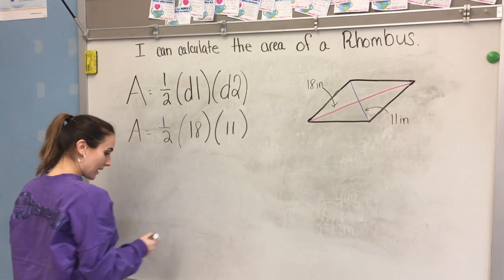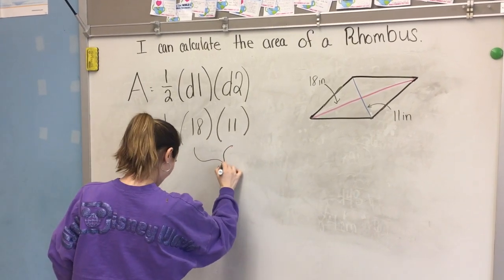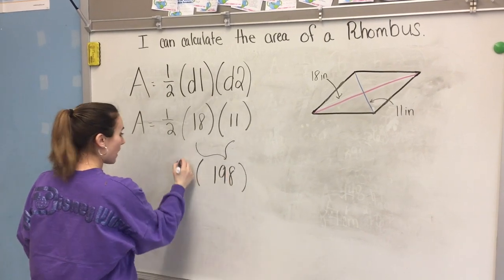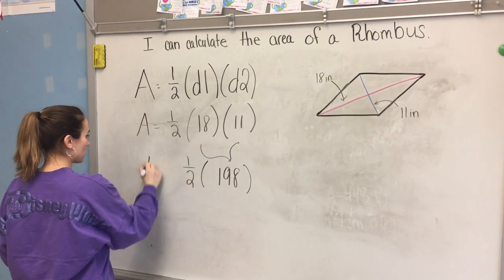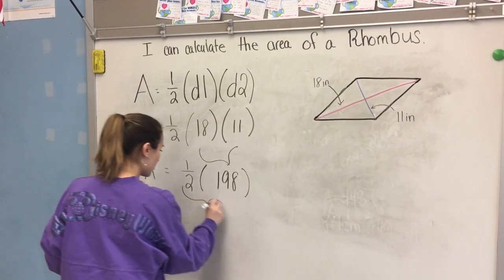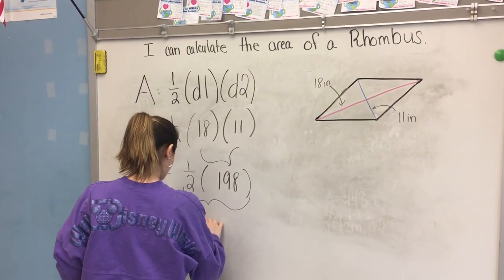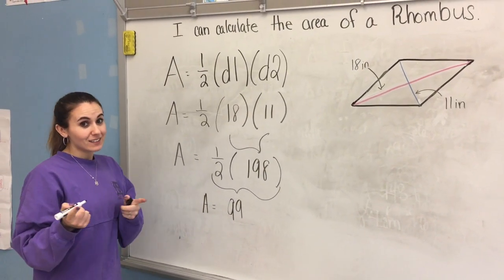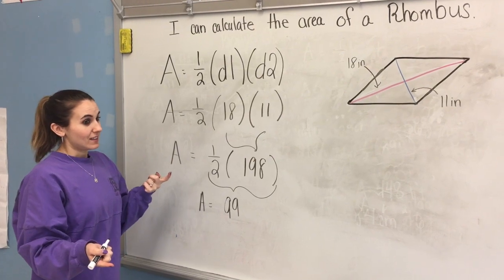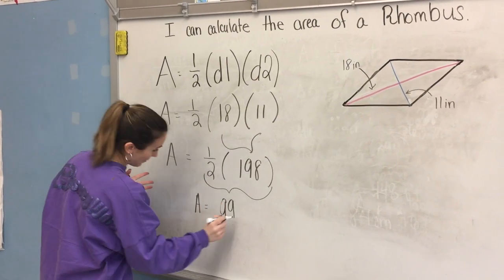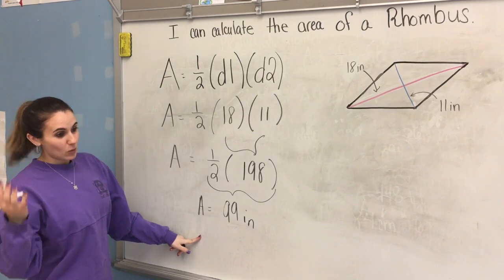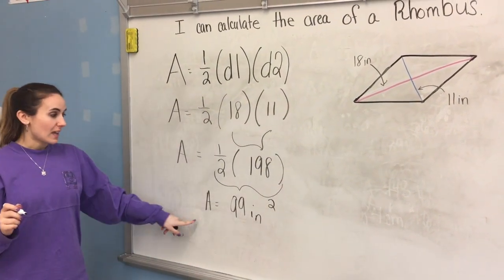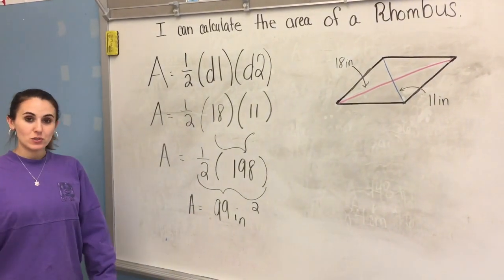So I have 18 and 11. Now if I multiply it together, I have 18 and 11 which equals 198. And then I can bring down my half. It's kind of similar to when we did the trapezoid. Now half of 198 gives us 99. So my area equals 99. And I'm not done because I need something. I need my inches, my unit of measure. And we should already know that area is always squared. So my final answer is the area of this rhombus is 99 inches squared.